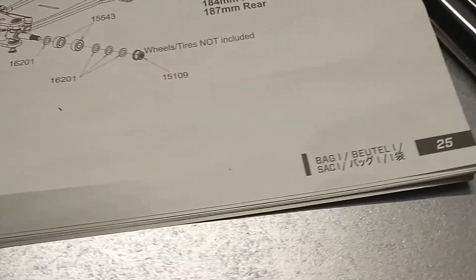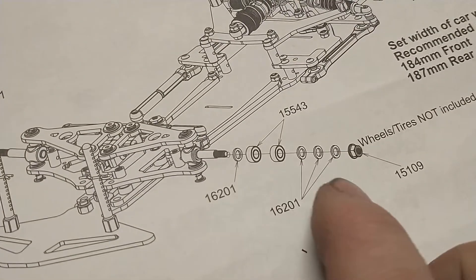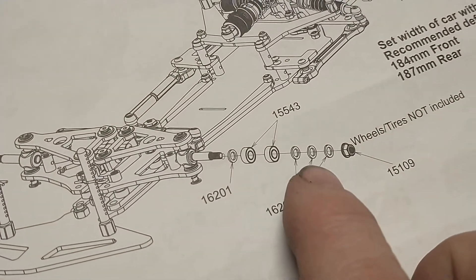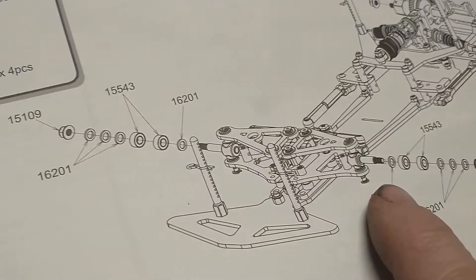Okay, BagEye, page 25. It looks like we're just going to be installing some washers, I'm guessing. A couple of bearings and a wheel nut onto my wheels.